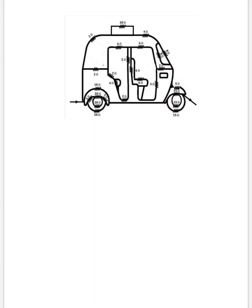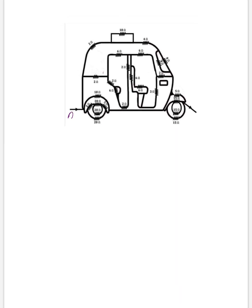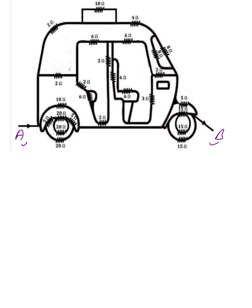Now our objective is to determine equivalent resistance between point A and point B. We have considered the terminals as A and B. If you see very carefully, suppose that resistances are given and there is a shortest path like this one.